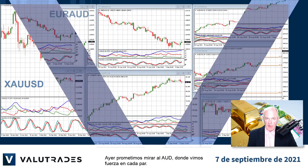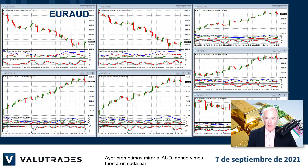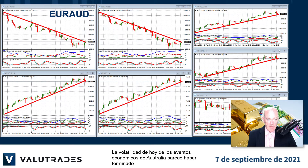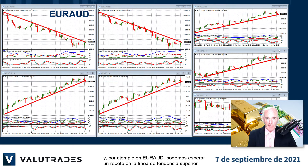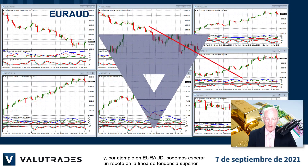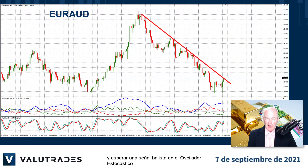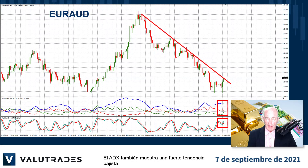Yesterday we promised to look at the Australian dollar, where we saw strength on every pair. Today's volatility from Australia's economic events seems to have finished, and for example on Euro Aussie we can wait for a bounce off the upper trend line and wait for a bearish signal on the stochastic oscillator. The ADX is displaying a strong downtrend as well.